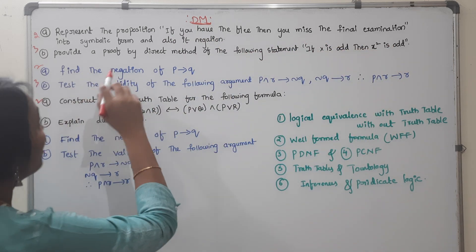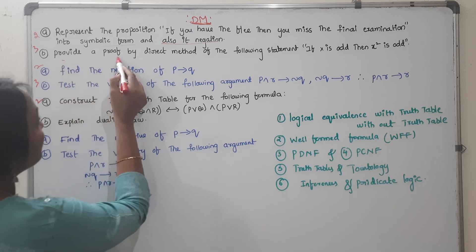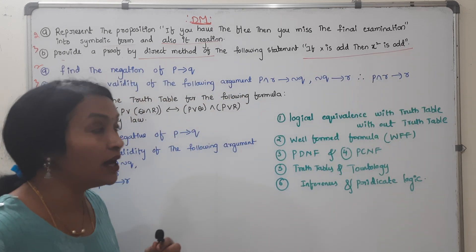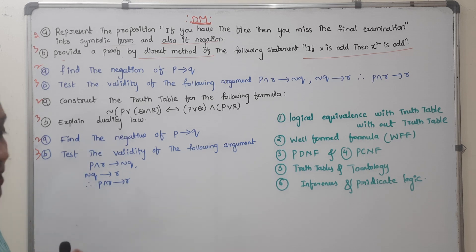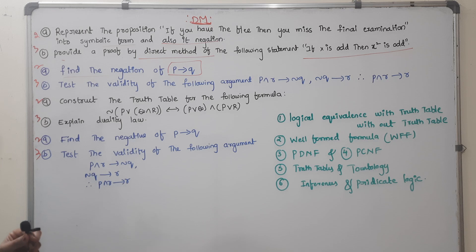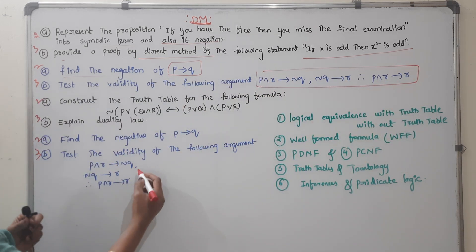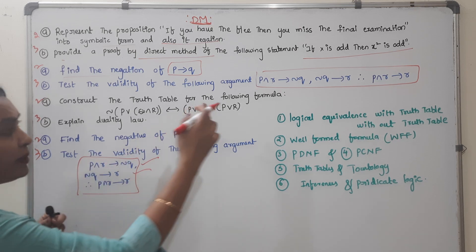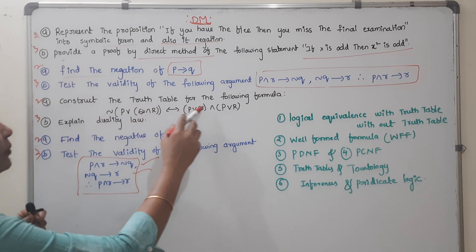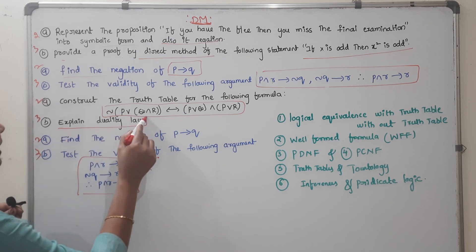Then you miss the final examination — express it in symbolic form, also its negation. Provide the direct method and indirect method. A statement: if X is odd then X squared is odd — prove using the direct method. Find the negation of this. Test the validity of the following statements. Construct the truth table of the following — for implication, write the truth table. Explain duality. Now there are 3-mark questions.